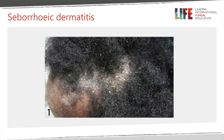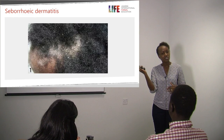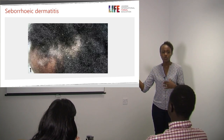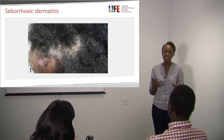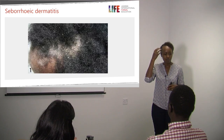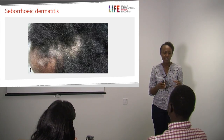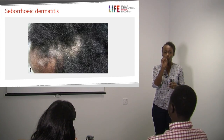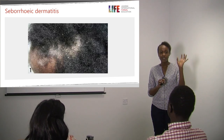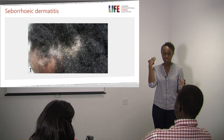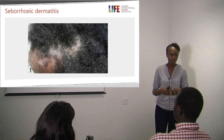Seborrheic dermatitis is another differential. A key differentiating factor is age — seborrheic dermatitis does not typically affect children except briefly during infancy as cradle cap, presenting more in late teenagehood to mid-20s. Seborrheic dermatitis presents with significant flaking — what we commonly call dandruff — without the diffuse areas of alopecia seen in tinea capitis. The flakiness and age of presentation are the main distinguishing features.